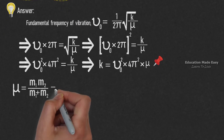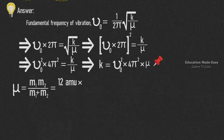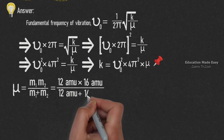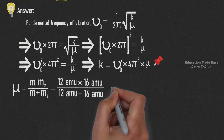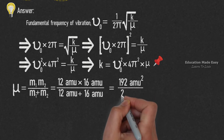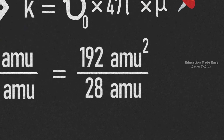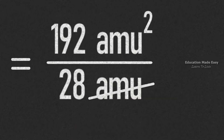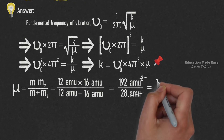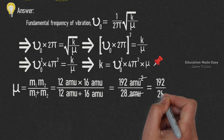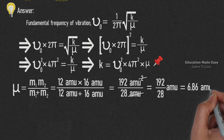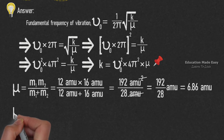Substituting these values, the equation becomes: μ = (12 amu × 16 amu) / (12 amu + 16 amu) = 192 amu² / 28 amu. Cancelling one amu from numerator and denominator, we get 192 / 28 amu = 6.86 amu.